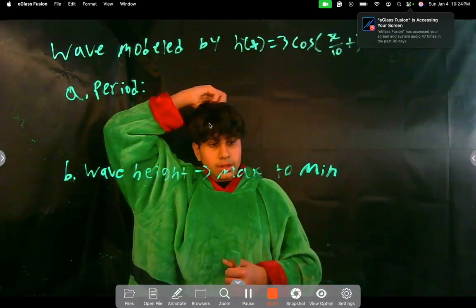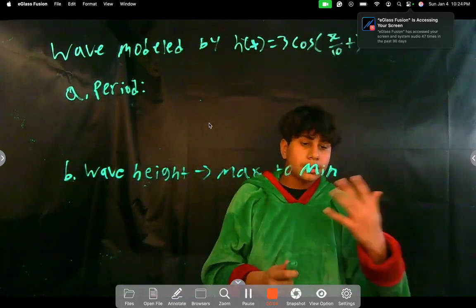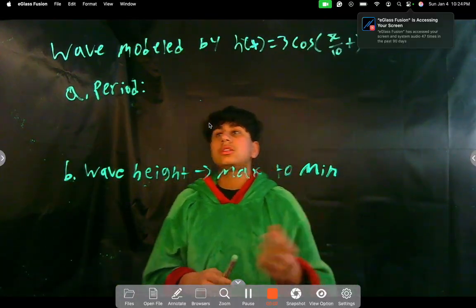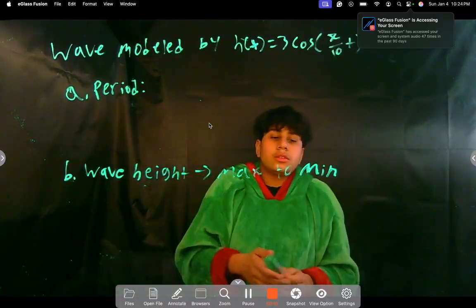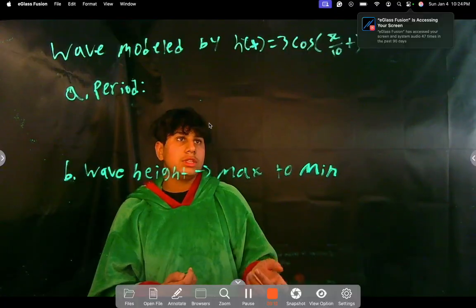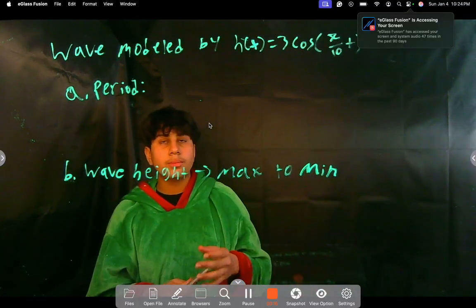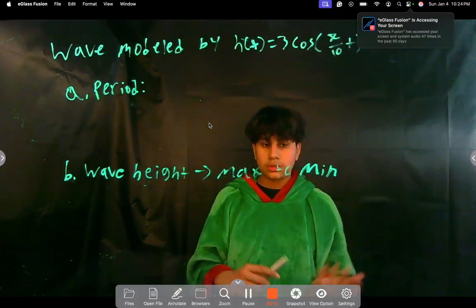Today we're going to be doing some application problems using trigonometry. We're given that there's a wave which is modeled by h(t) = 3cos(π/10 t). In the context of the problem, the wave is like an actual wave you'd see in the ocean, but I just made it more concise here.